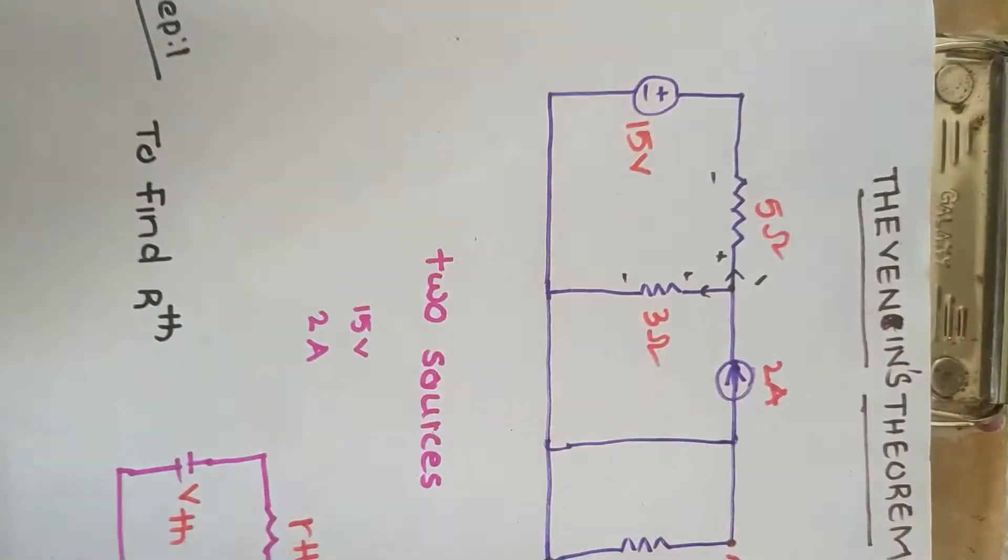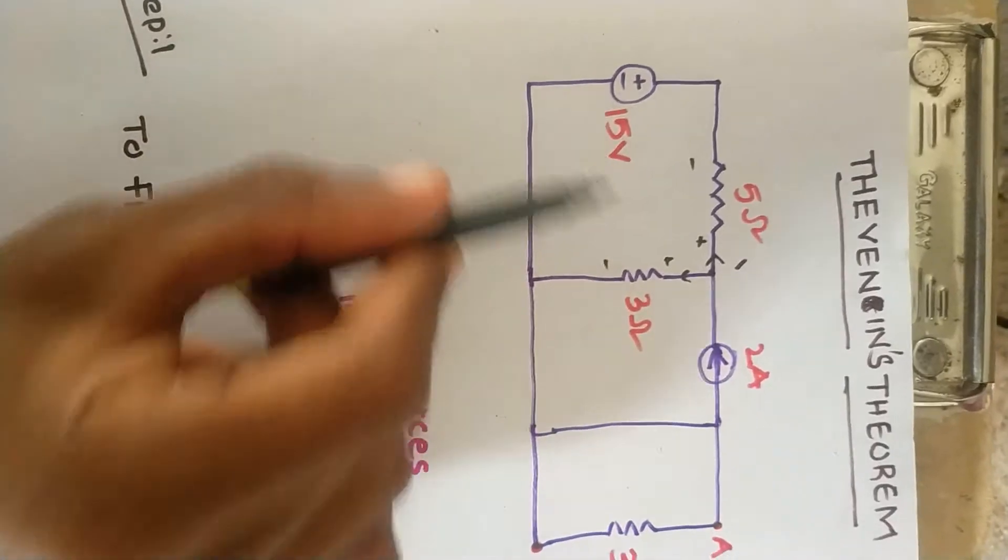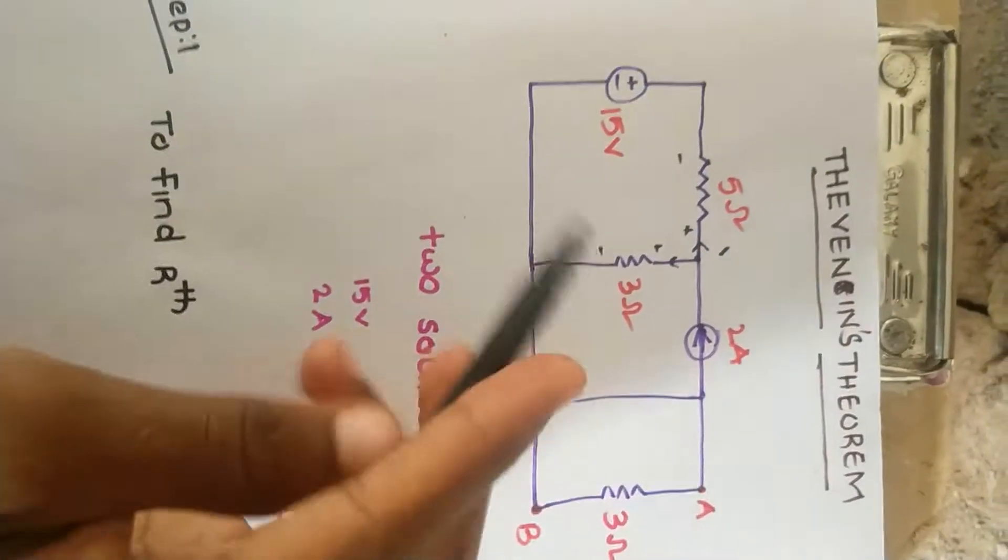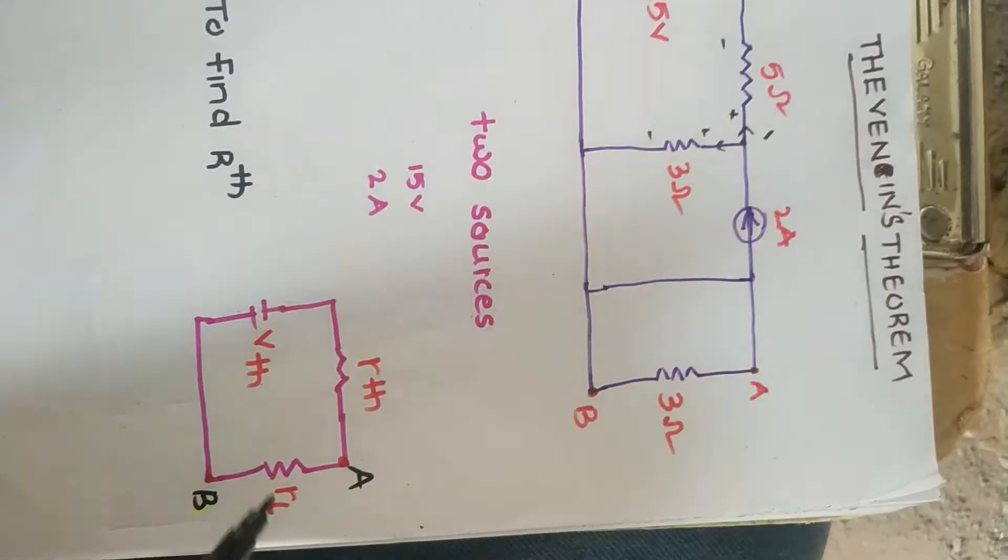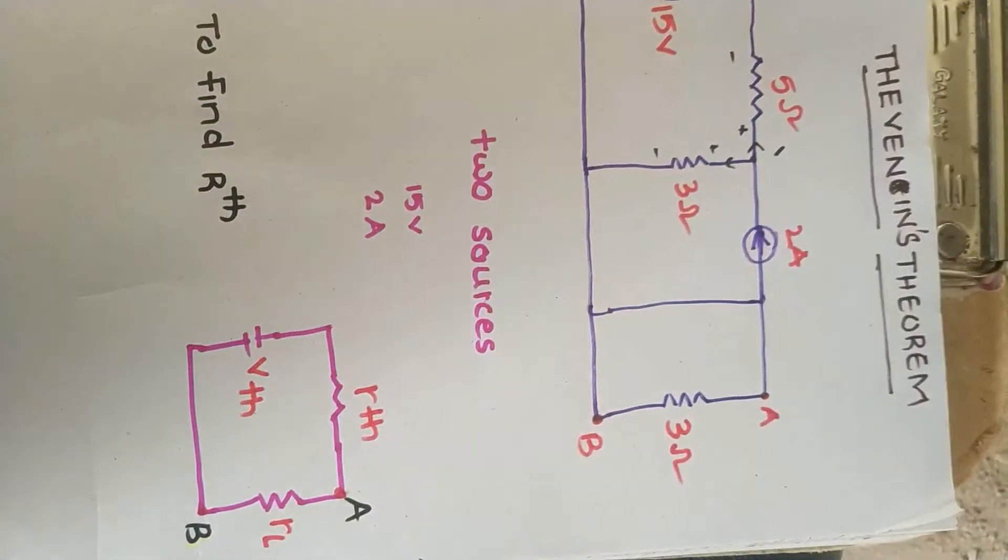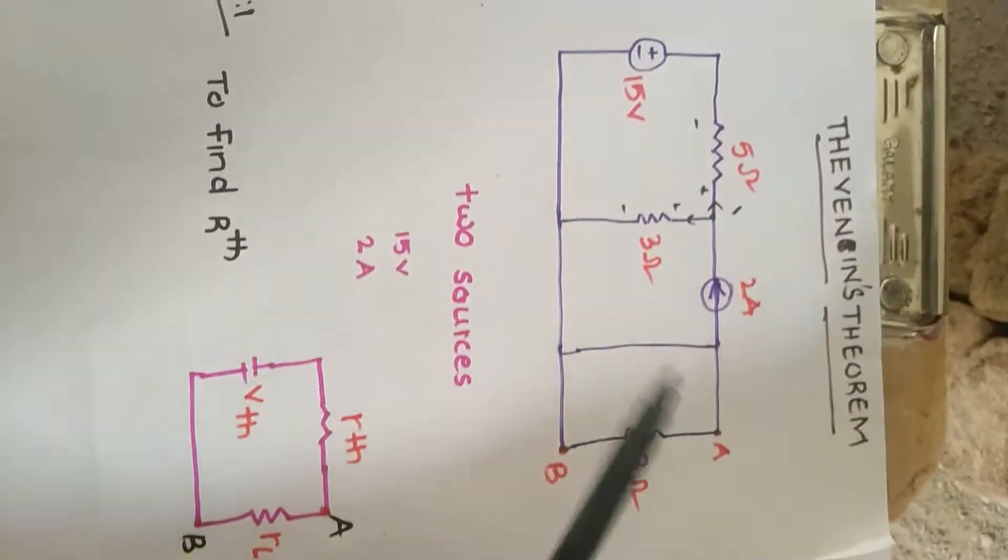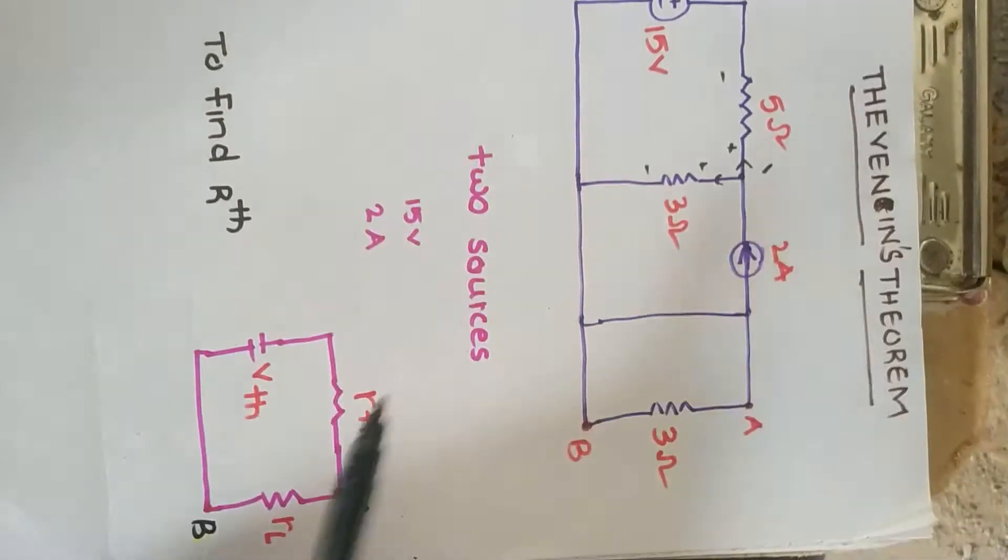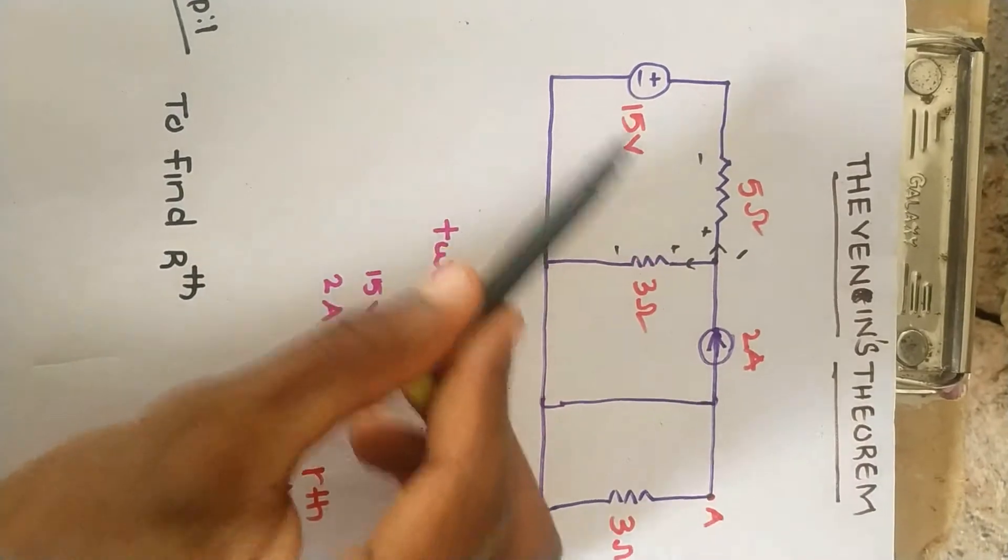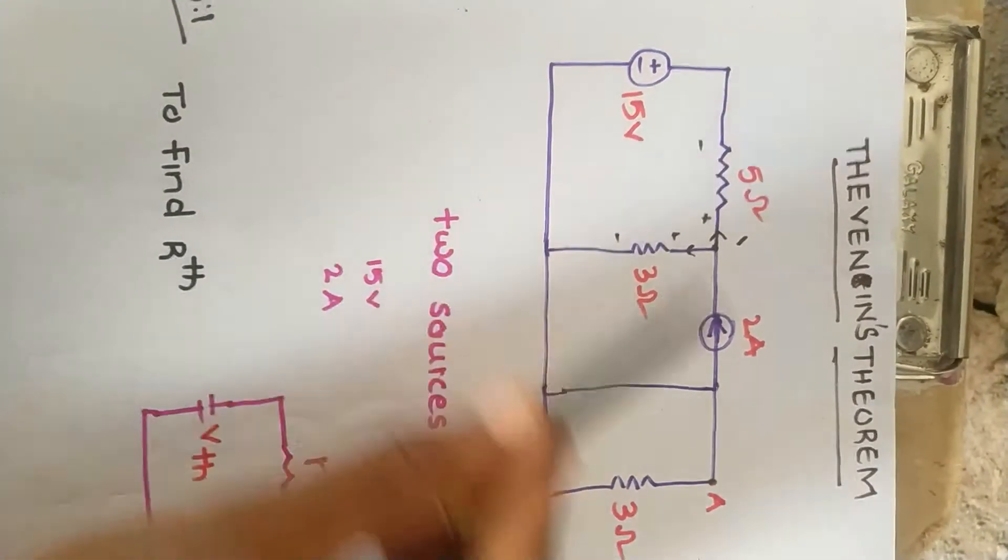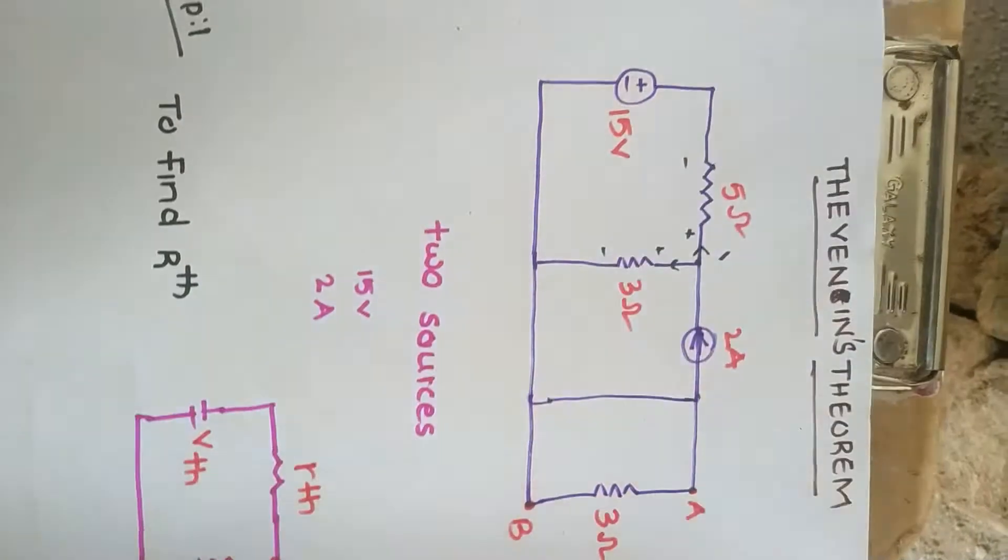According to Thevenin's theorem, one complex circuit is called R_th V_th, where R_L value is already added. So according to Thevenin's theorem, this circuit has two sources: 15 volts voltage source and 2 amperes current source.